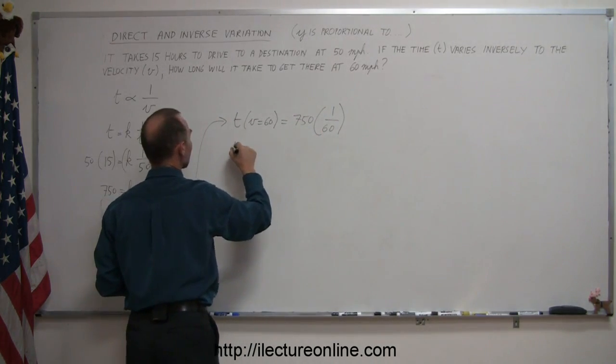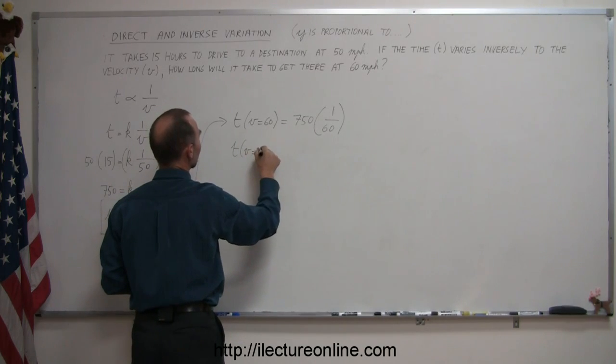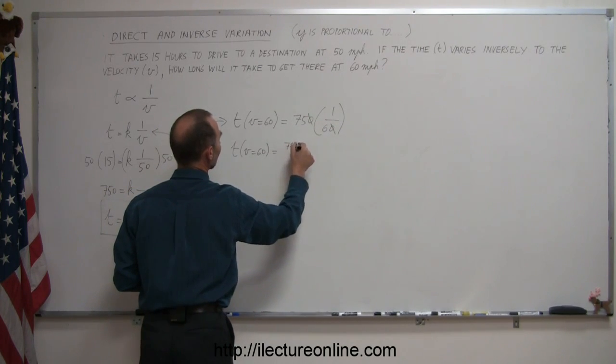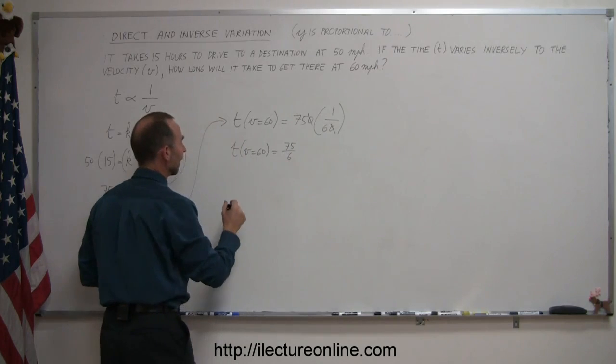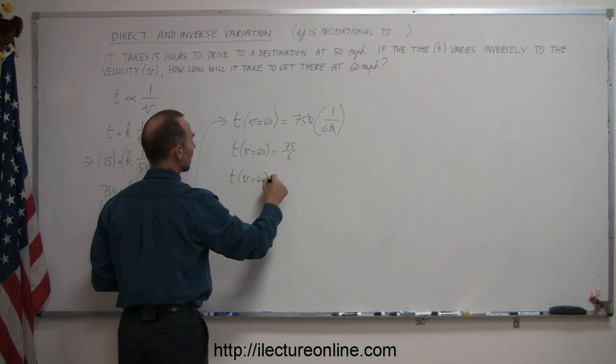And so we can say that t when v equals 60, the zeros cancel out, it's 75 divided by 6. And that looks like t when v equals 60 is equal to...